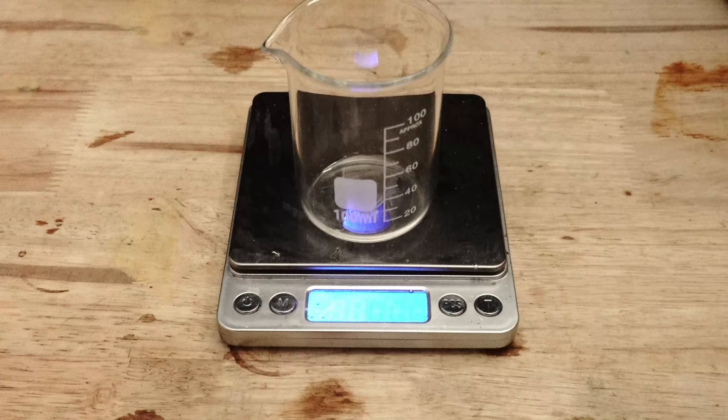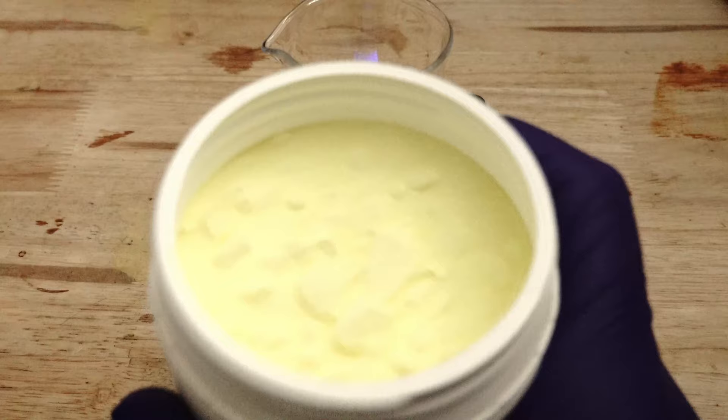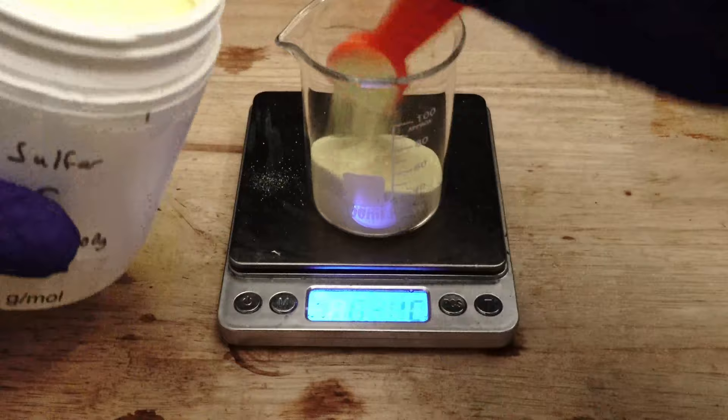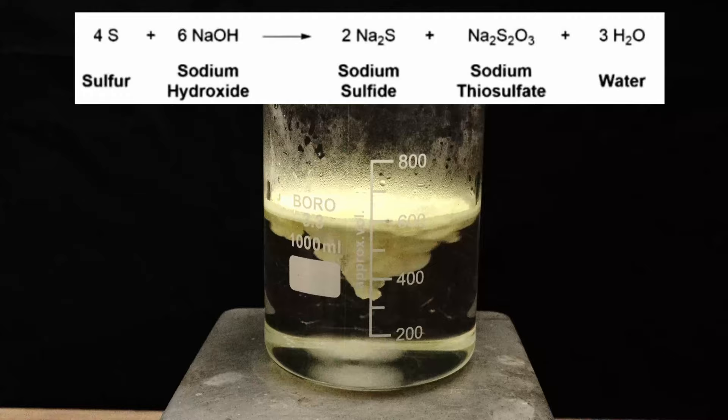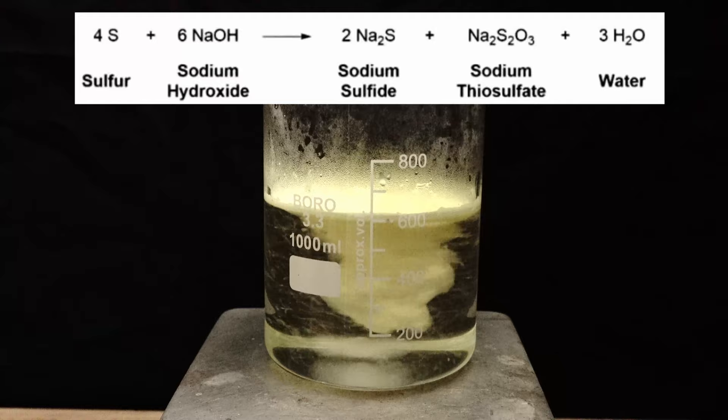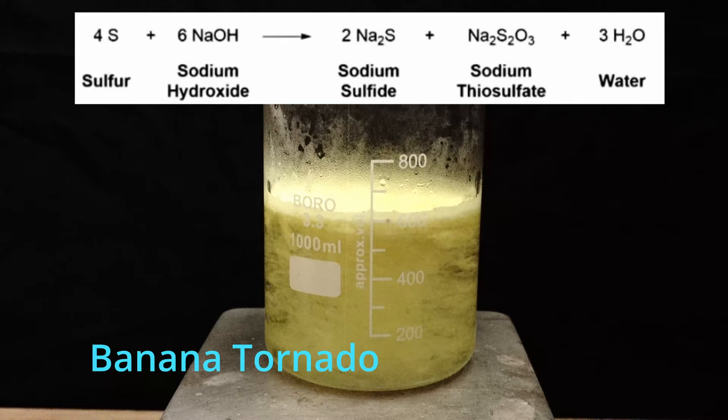I transfer this over to a larger beaker, then proceed to weigh out and add 45 grams of what I like to call banana powder, something the average Joe seems to call sulfur. It tastes great in protein shakes. Essentially, what we are creating is a sodium sulfide solution which will form a soluble complex with the mercury sulfide. This allows it to dissolve into the water, making it vulnerable to the finesse of the aluminium we will add later on.